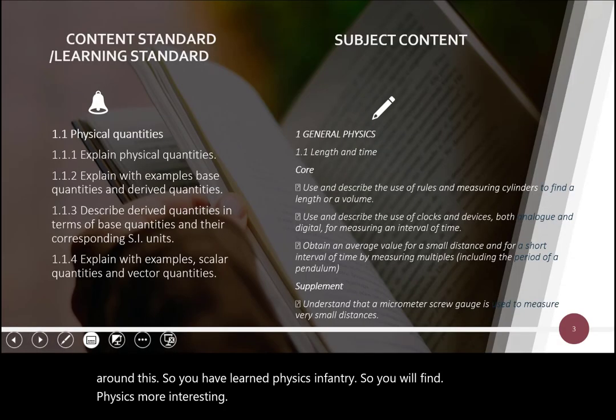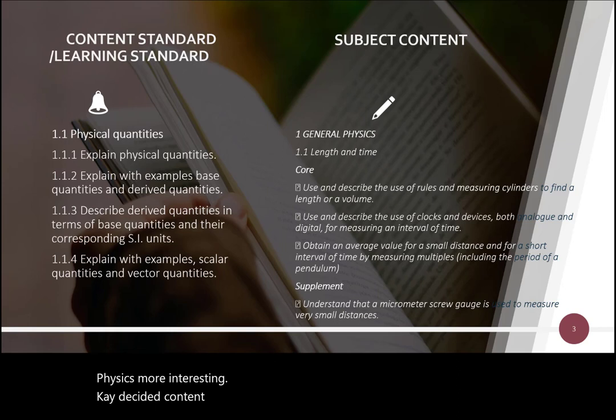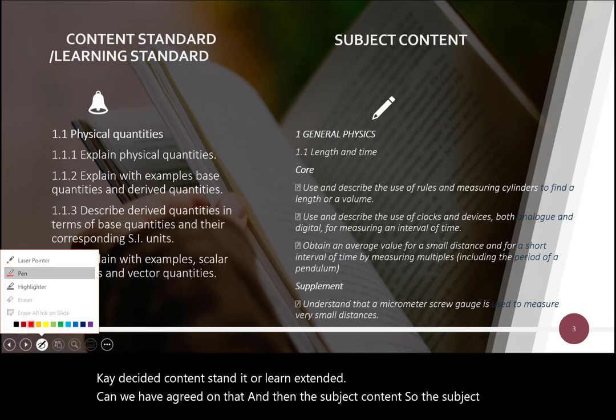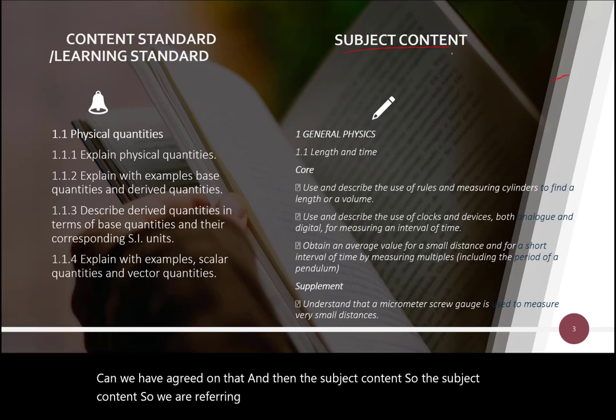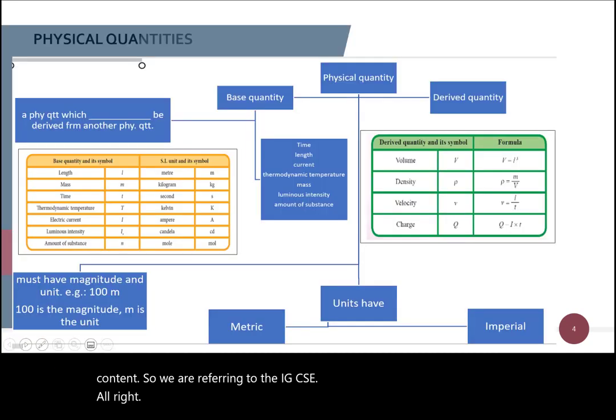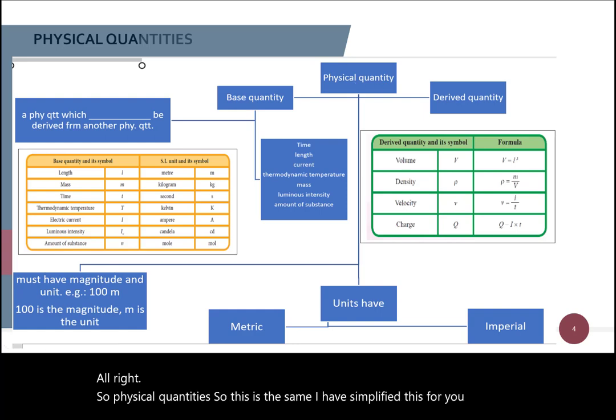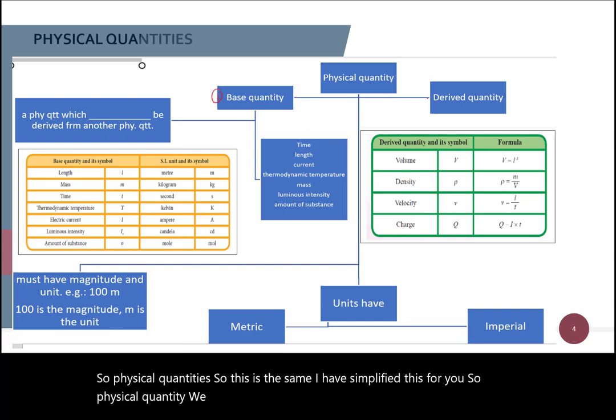So these are the content standard, the learning standard. So we have the subject content. So we are referring to the IGCSE. So this is the physical quantity. I have something about this for you. So physical quantity with the base quantity, as well as the derived quantity. So what is base quantity?